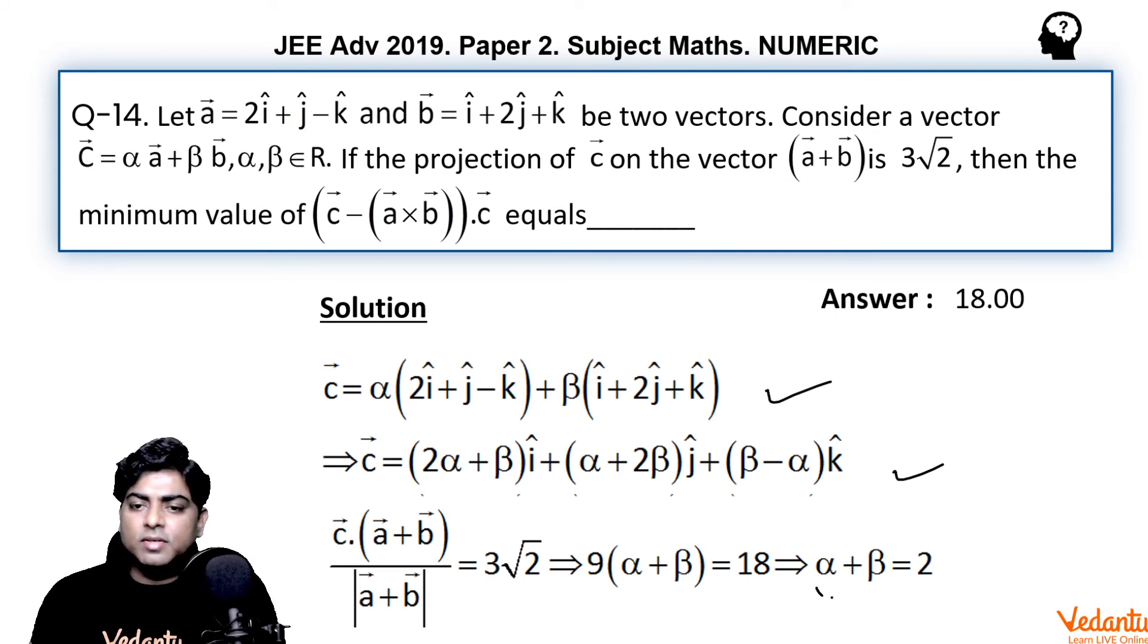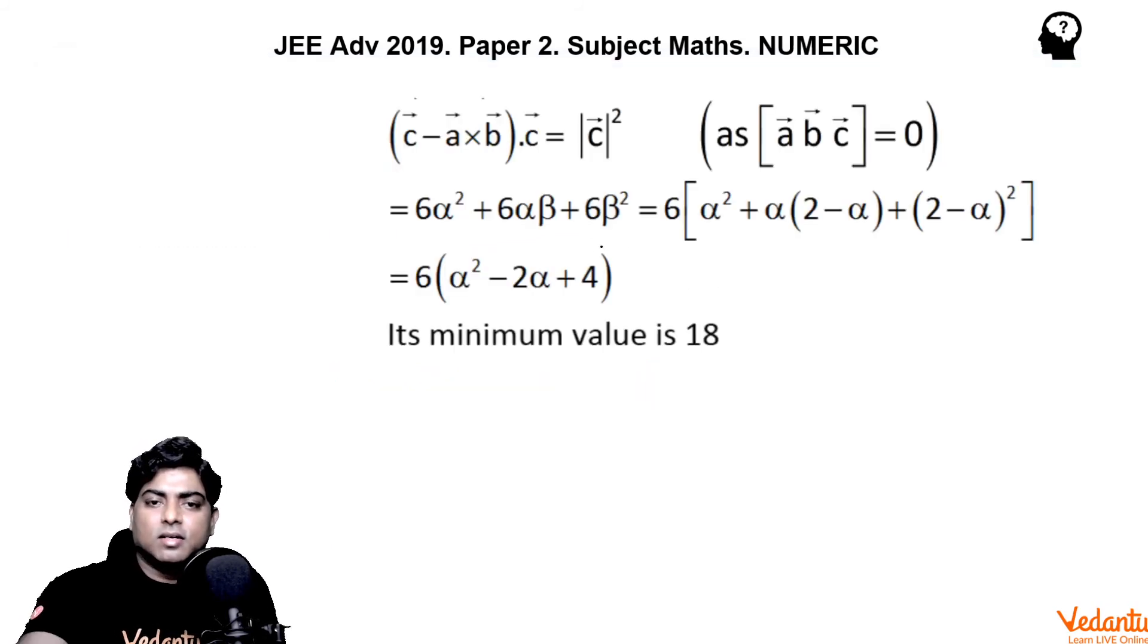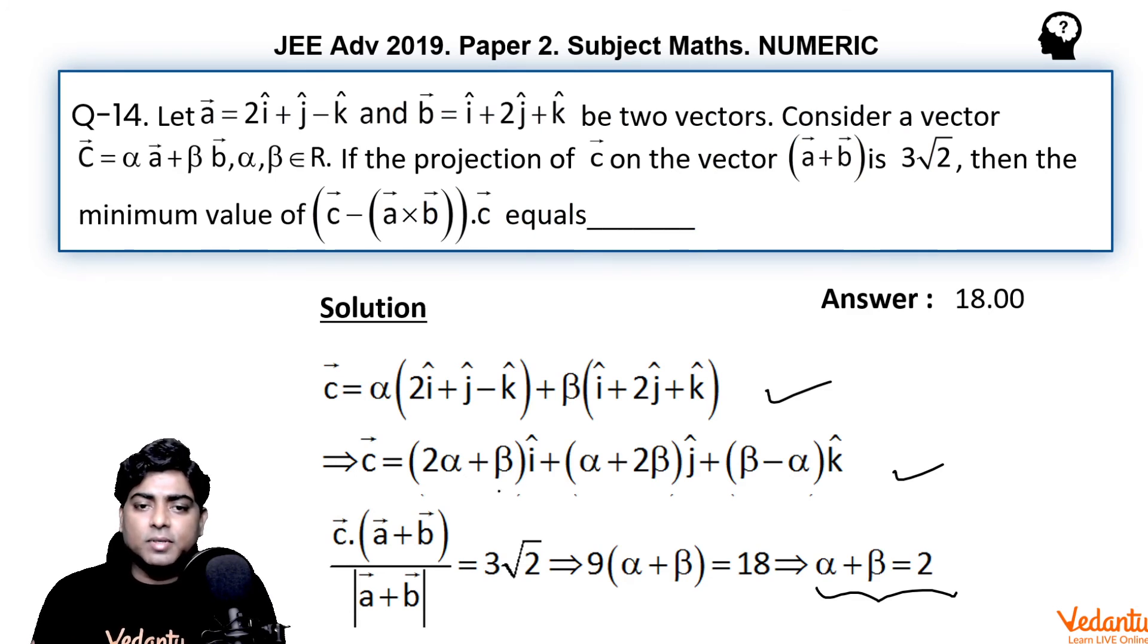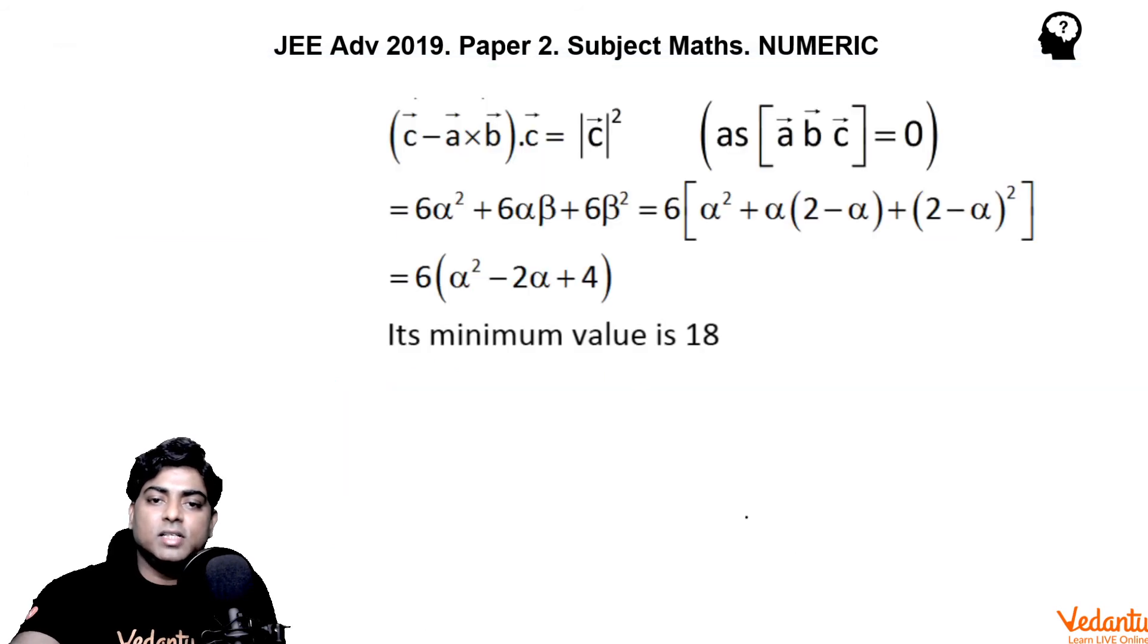c is written, then using the formula of projection of c on a + b, we got a relation between alpha and beta: alpha plus beta equals 2. Then applying what was c, alpha plus beta i cap. So alpha plus beta is 2, so we can express it in terms of alpha only. Beta can be replaced by 2 minus alpha. Finally, you will get mod c squared in terms of alpha as this. Then we can easily get the value of the minimum value of this expression as 18.